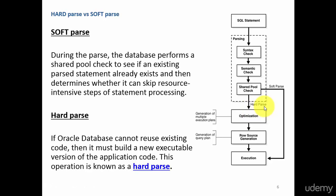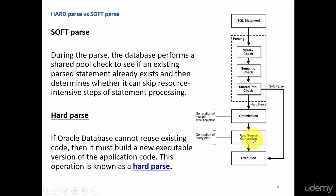If it finds the statement in the shared pool, that means it did a soft parse. If it didn't find it in the shared pool, that means it went through a hard parse. You can even relate it to the real world: if it had to do all the steps, that means it's a hard parse. If it skips some steps like optimization and row source generation, that means it was a soft parse.